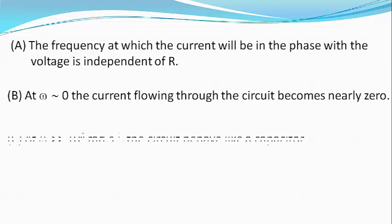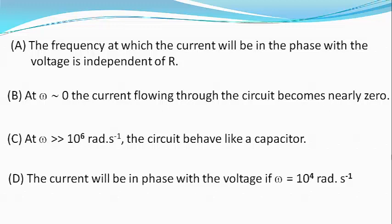Option C: at omega greater greater than 10 raised to 6 radians per second, the circuit behaves like a capacitor. And option D: the current will be in phase with the voltage if omega equals 10 raised to 4 radians per second.